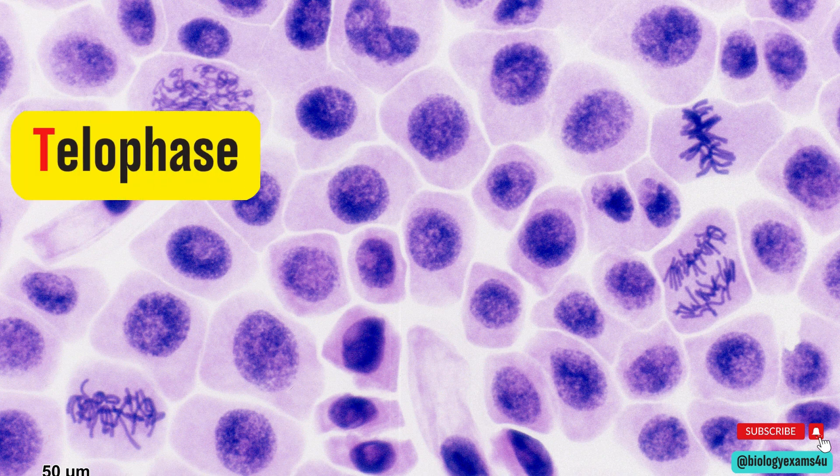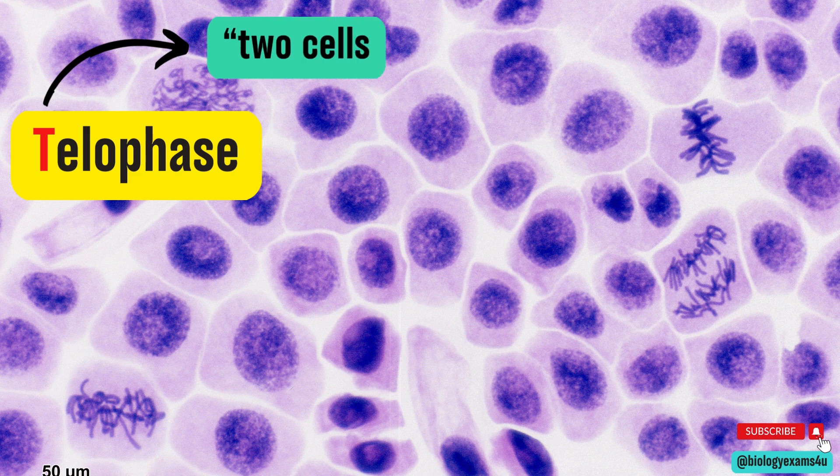Next is the telophase. T stands for two cells. In telophase the chromosomes are clumped together at the poles. The cell itself appears to be pulled apart and two new cells are starting to form. The second clue is that the size of the newly formed cell is often small compared to other cells.